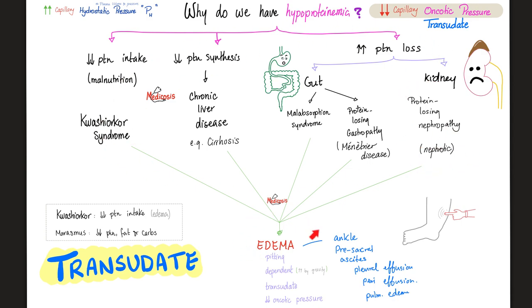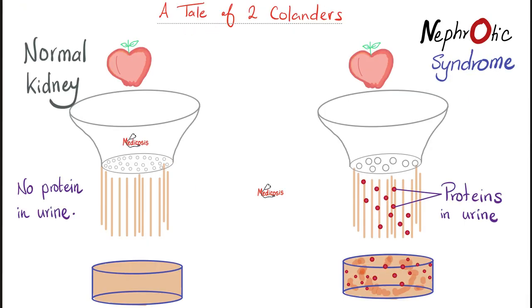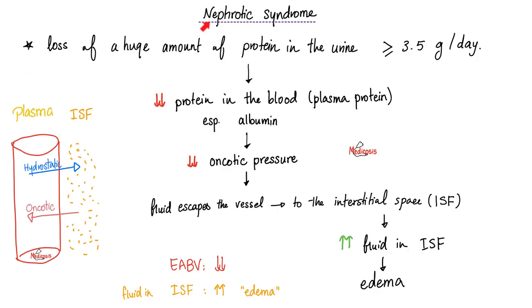All of these things will lead to edema. A good kidney is like a good colander — it should not let any debris pass through. But a kidney with nephrotic syndrome is like a horrible colander; look at all this protein in the urine. Nephrotic syndrome: my kidney is wasting my protein in the urine, especially albumin. And without albumin, I have no oncotic pressure. Fluid will keep leaking outside the vessel and accumulate in the interstitial fluid — that's edema.